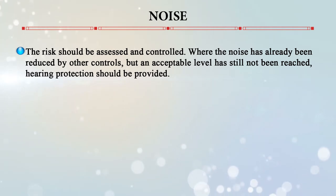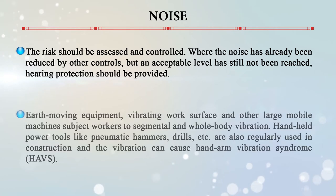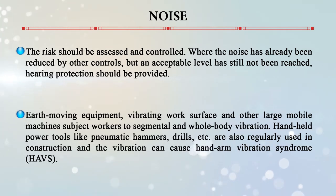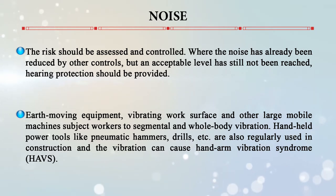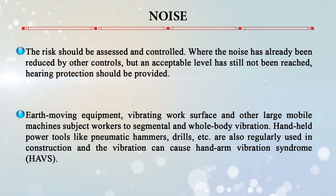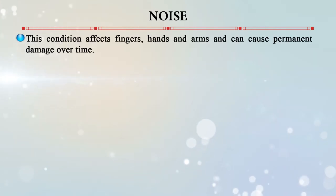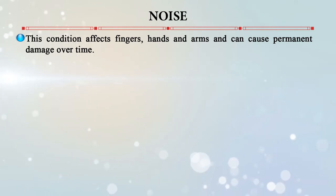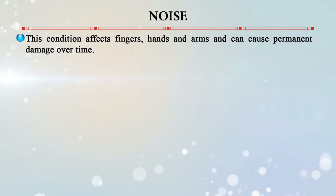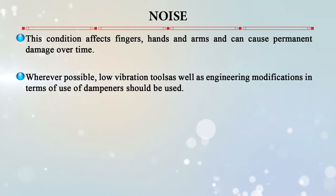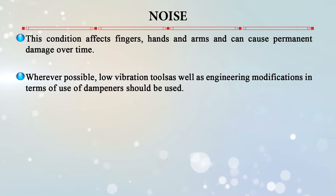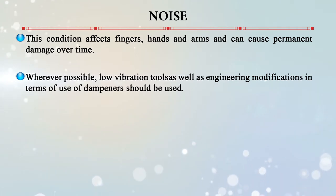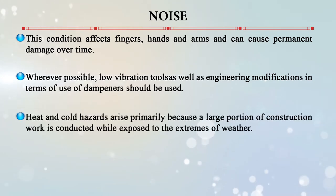Where noise has already been reduced by other controls but acceptable levels have not yet been reached, hearing protection should be provided. Earth-moving equipment, vibrating work surfaces, and other large mobile machines subject workers to segmental and whole-body vibration. Handheld power tools like pneumatic hammers and drills also cause hand-arm vibration syndrome, affecting fingers, arms, and shoulders, potentially causing permanent damage. Engineering modifications such as dampeners and other engineering controls should be applied where possible.